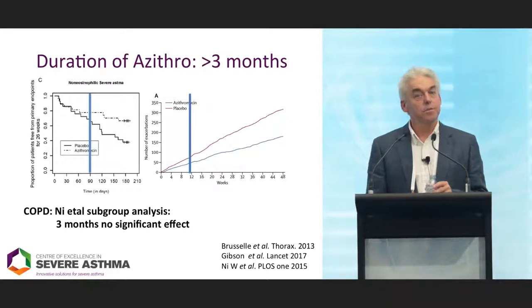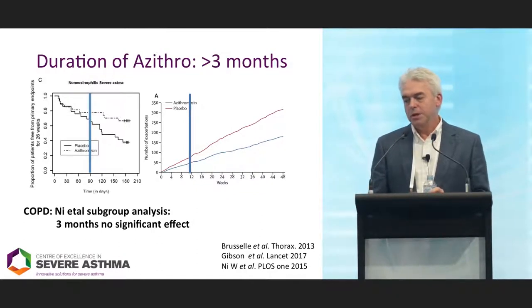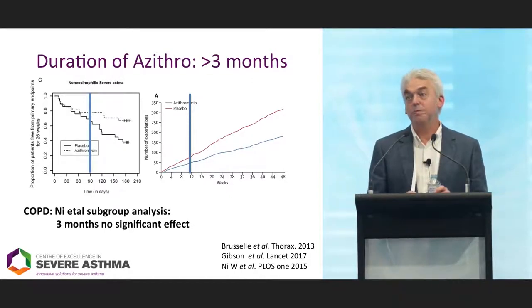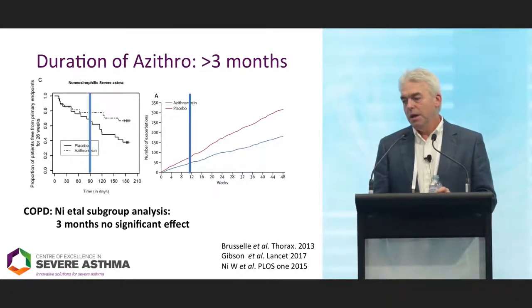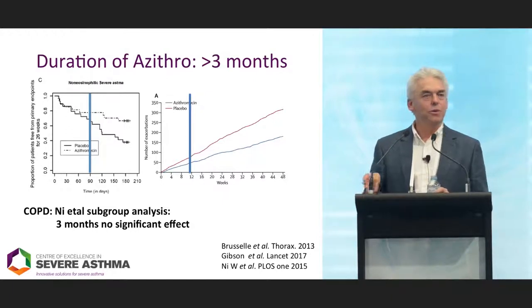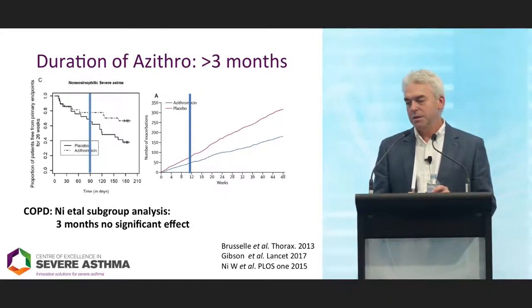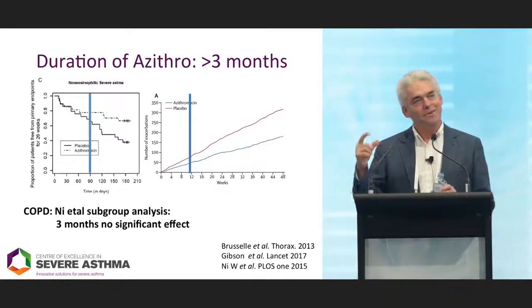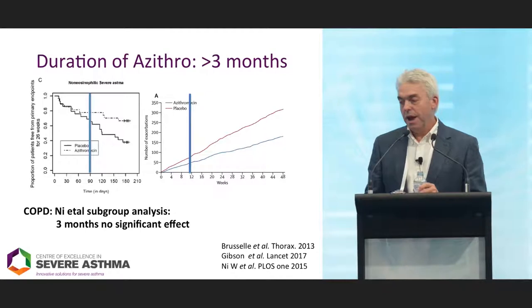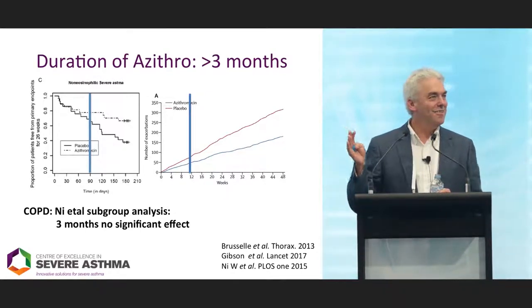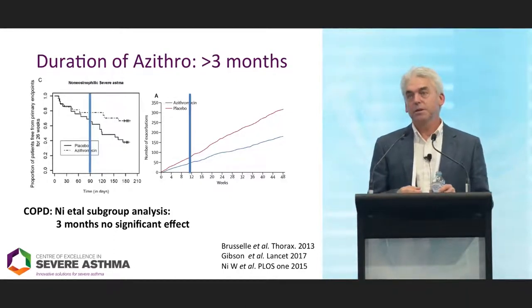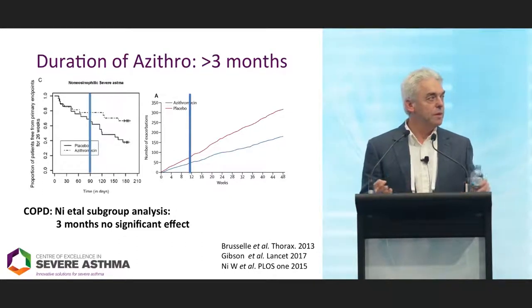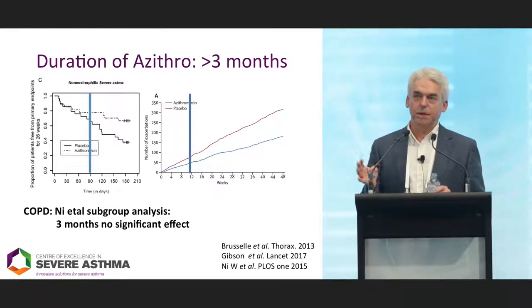What about duration of therapy? In the COPD meta-analysis, studies less than three months were not significantly positive — it appeared ineffective under three months. Looking at the two asthma studies with a blue line drawn at three months, the Azizar study is not showing an effect until after three months. In our study, the magnitude of effect is greater for the last nine months than the first three months. So you probably need a minimum of three months to assess an effect on exacerbations.